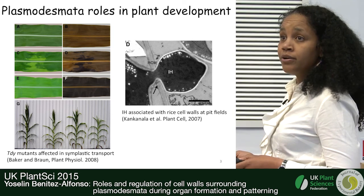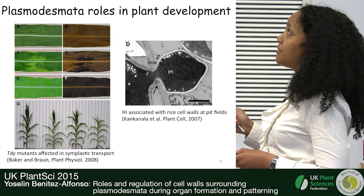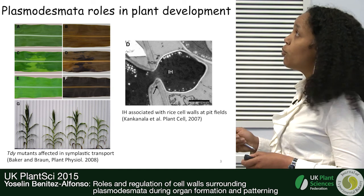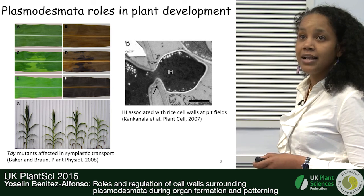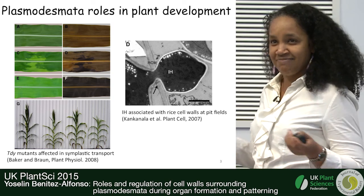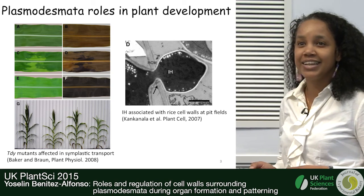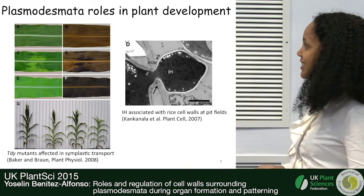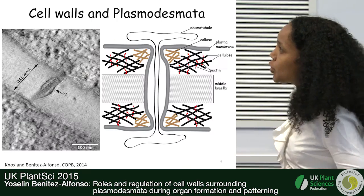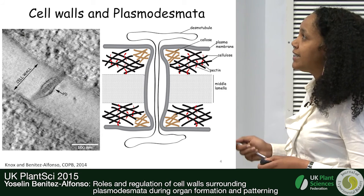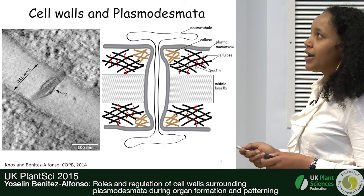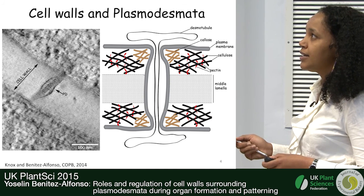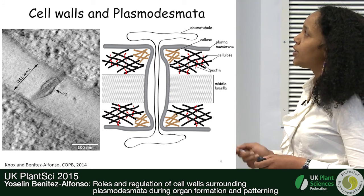Here you can see another example: between rye cells, invasive hyphae from rice blast fungus move through Plasmodesmata between cells. So I think I can convince you that this channel certainly deserves attention. Let's look at the channel in more detail. Here you see a tomograph of Plasmodesmata — as you can see, they are inserted in the cell wall.